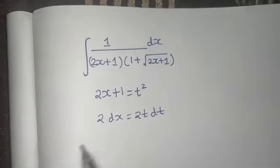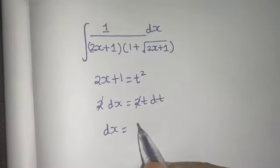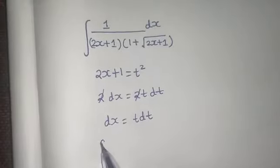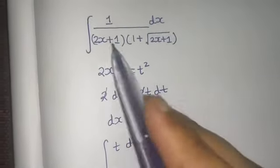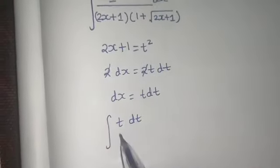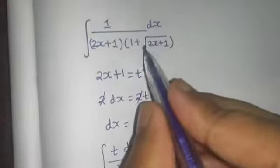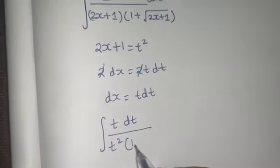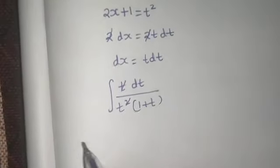Now our integral converts to: in place of dx we write t dt, this 2x plus 1 is nothing but t squared, and inside this bracket we get 1 plus t, because under root t squared is t. Now the t gets cancelled.